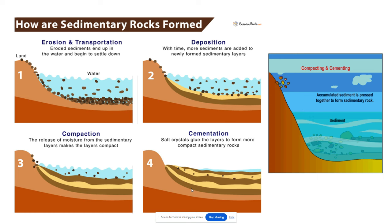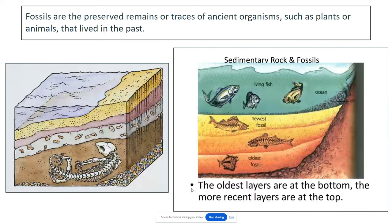Since this process takes so long, sometimes ancient organisms may live and die and their remains get trapped within these rock layers as they form. It's helpful for geologists to find these ancient fossils — a fossil is a preserved remain of an ancient organism — to figure out how old that rock layer is and how old everything within that rock layer is. Each rock layer is a different age.